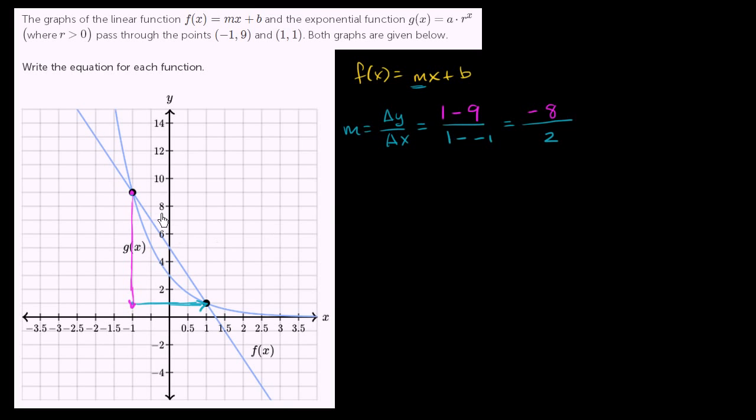The way I drew it, we're finishing at x = 1, y = 1. We started at x = -1, y = 9. So we just took the differences. We get -8 over 2, which equals -4. And so now we can write that f(x) = -4x + b.